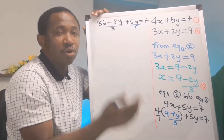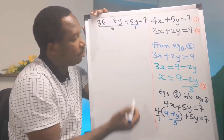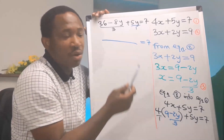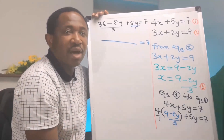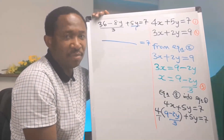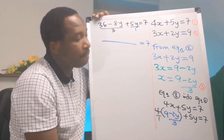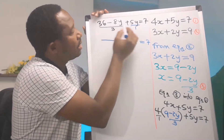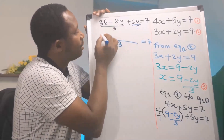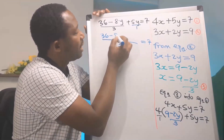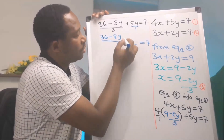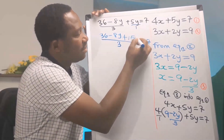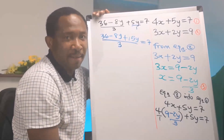Next we are going to find the lowest common multiple. The LCM of 3 and 1 is 3. So 3 divided by 3 is 1, and multiplying everything on top gives us 36 minus 8y. Then 3 divided by 1 is 3, and 3 times 5y is 15y.